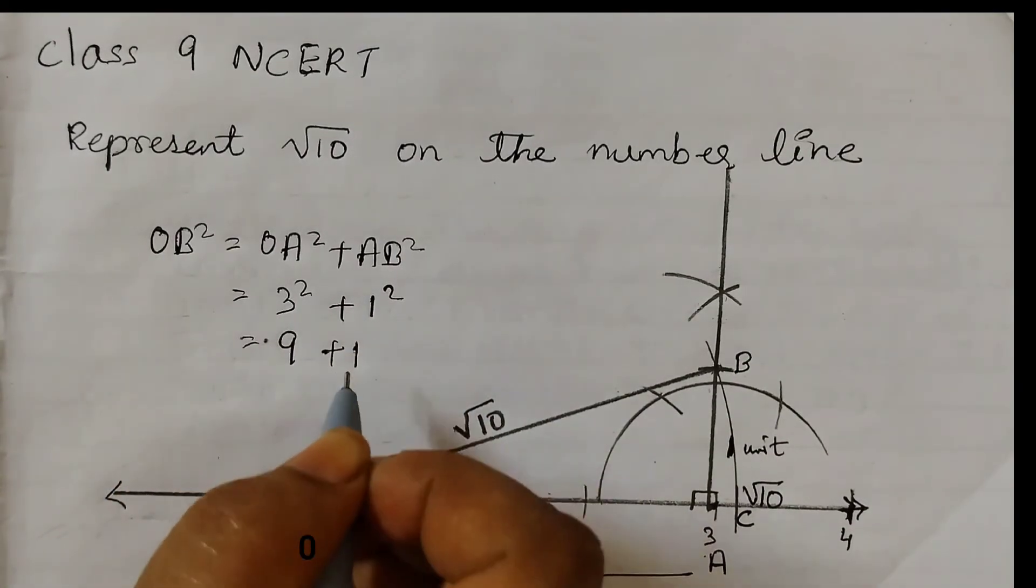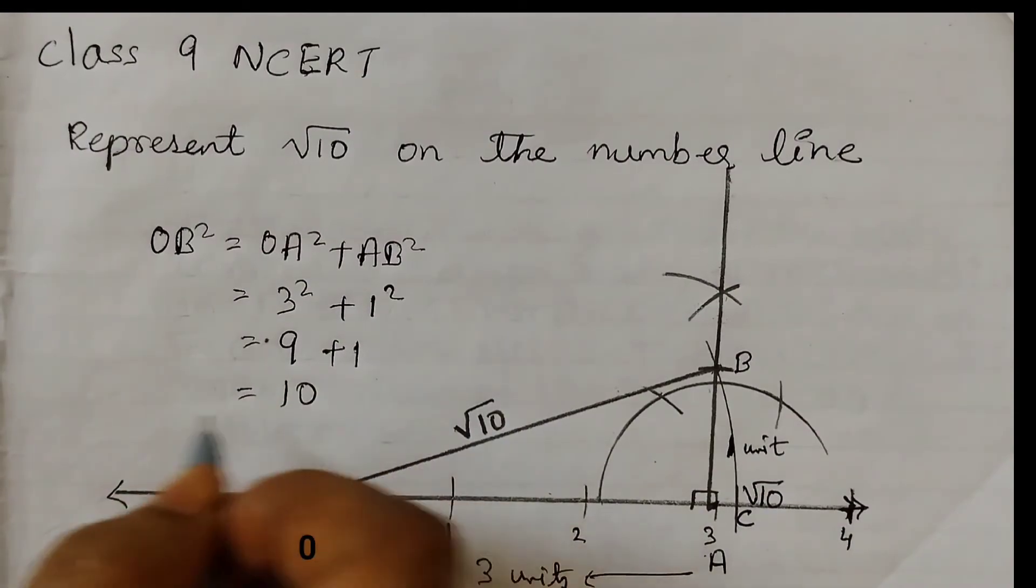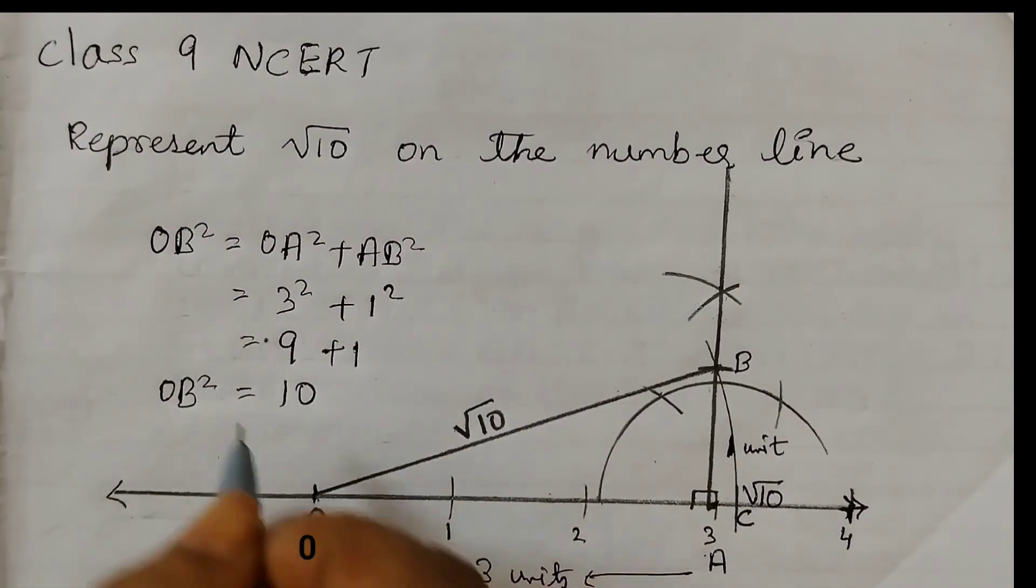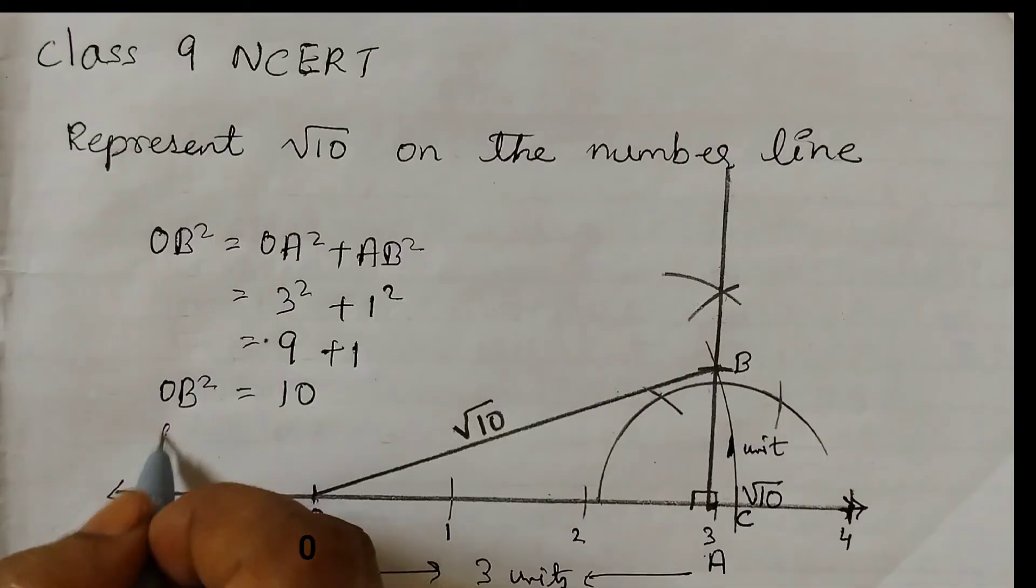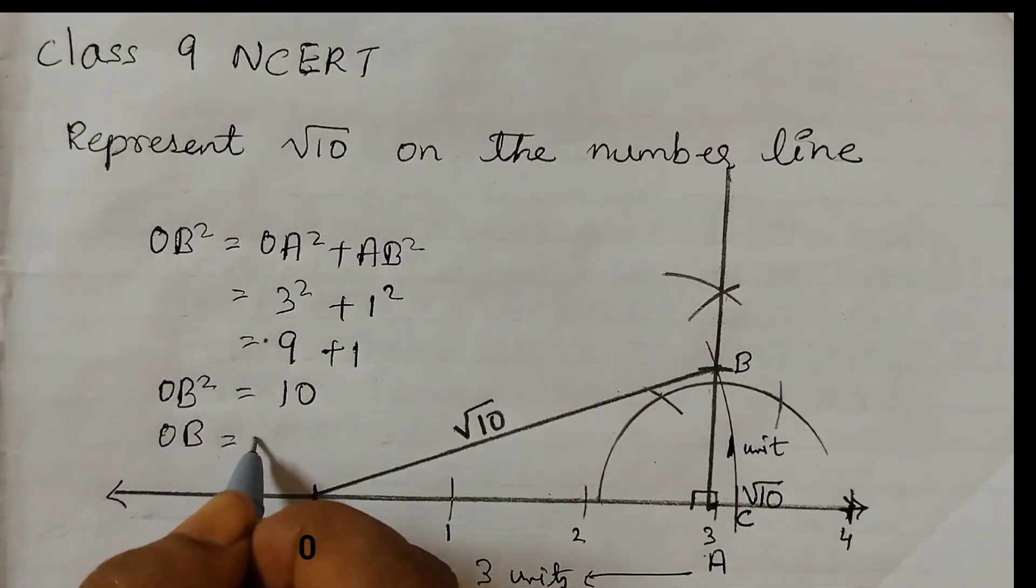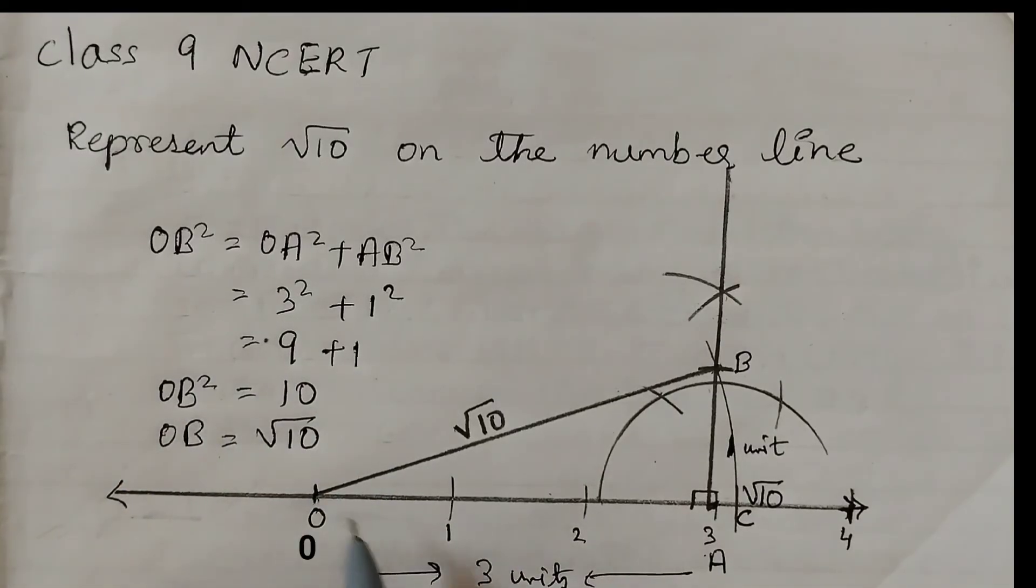It is 9 plus 1 which is equal to 10. So OB squared is equal to 10, or we can say OB is equal to square root of 10. So this is square root of 10. We take this as the radius. This is also square root of 10.